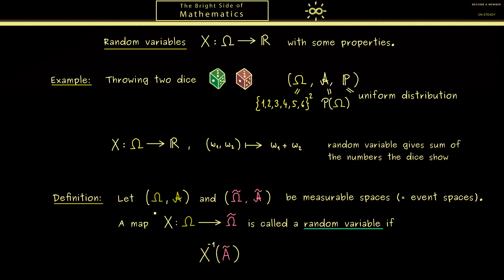However, in the end when we have a probability measure P, we want to measure these sets here. Hence it's necessary that this is not just a subset of Ω but also an element of the sigma algebra A. Therefore, this is exactly the right condition we need here for all Ã. There we have it—this is the whole definition of a random variable, a concept we will need a lot.